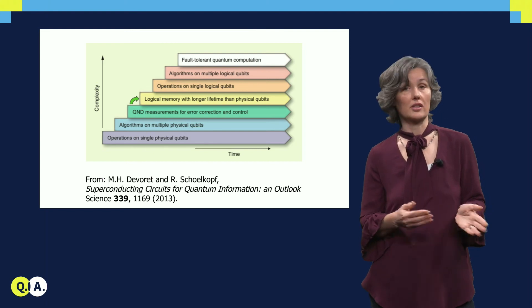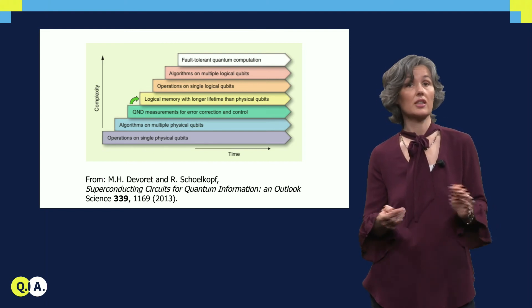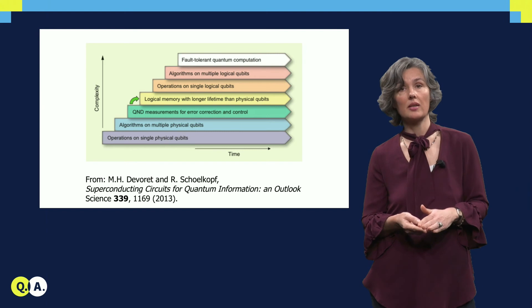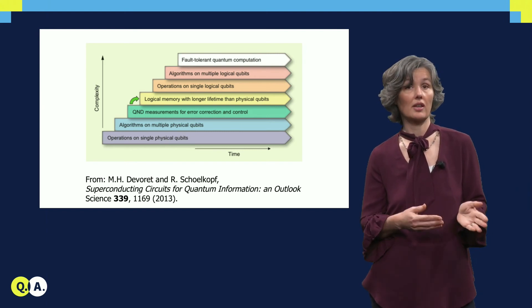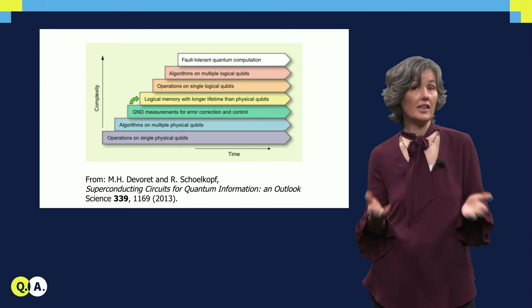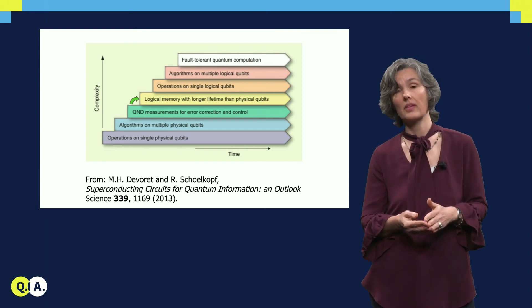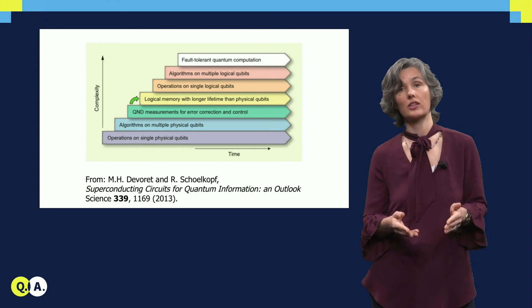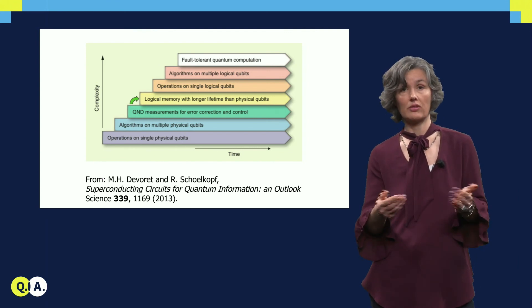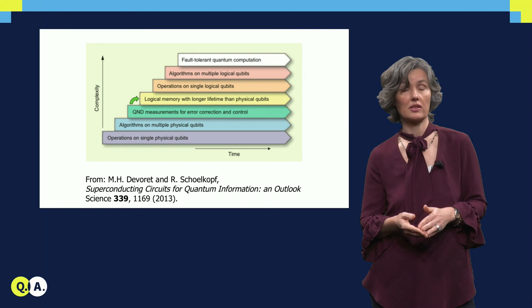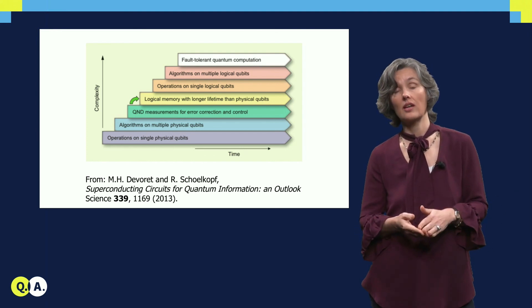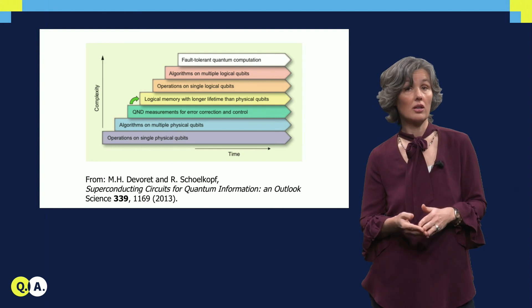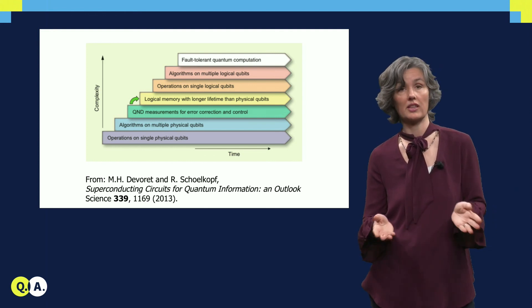Now once we store a logical qubit, let's say that's successful, we can apply schemes that let us do single and two qubit gates on these logical qubits as well. We have many schemes, theoretical schemes available for this. This means that once we have logical qubits, we can envision running quantum algorithms on these qubits. And if these qubits, these logical qubits, have low error rates, the quantum algorithms can be long and hence realize a powerful quantum computation.